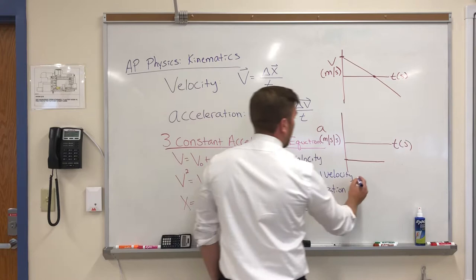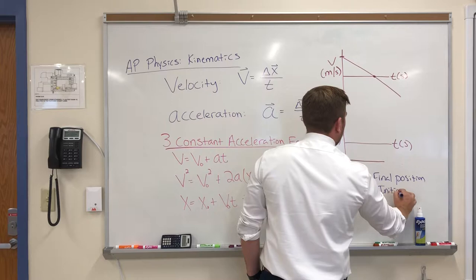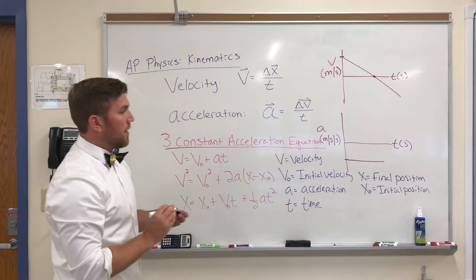T is our time. Always be in seconds. X represents our final position. We always measured in meters. And X0 is our initial position. Again, always measured in meters.